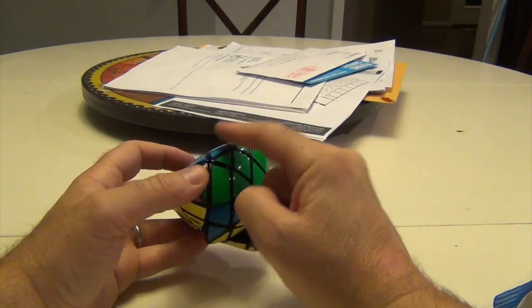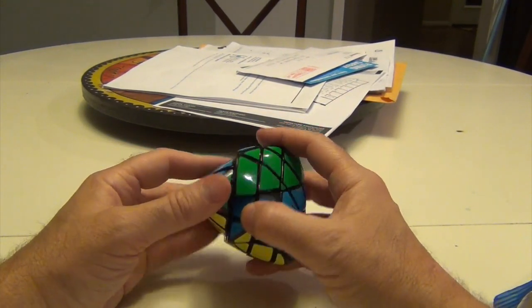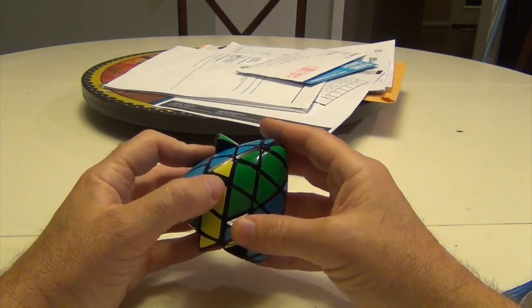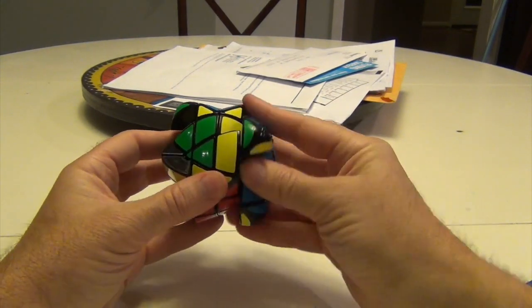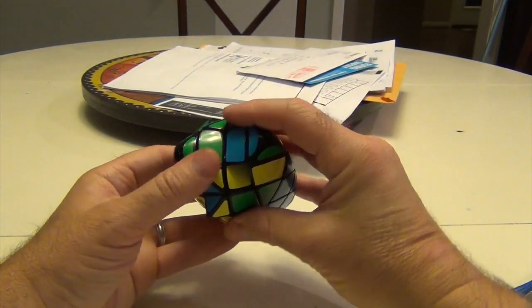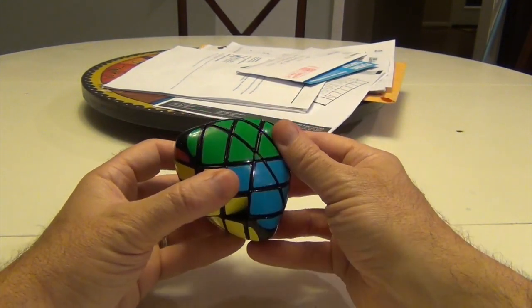And we're going to do this swapping algorithm, which you probably know because you got this far. And that's going to be L-inverse, U, R, U-inverse, L, U, R-inverse, and this goes back.